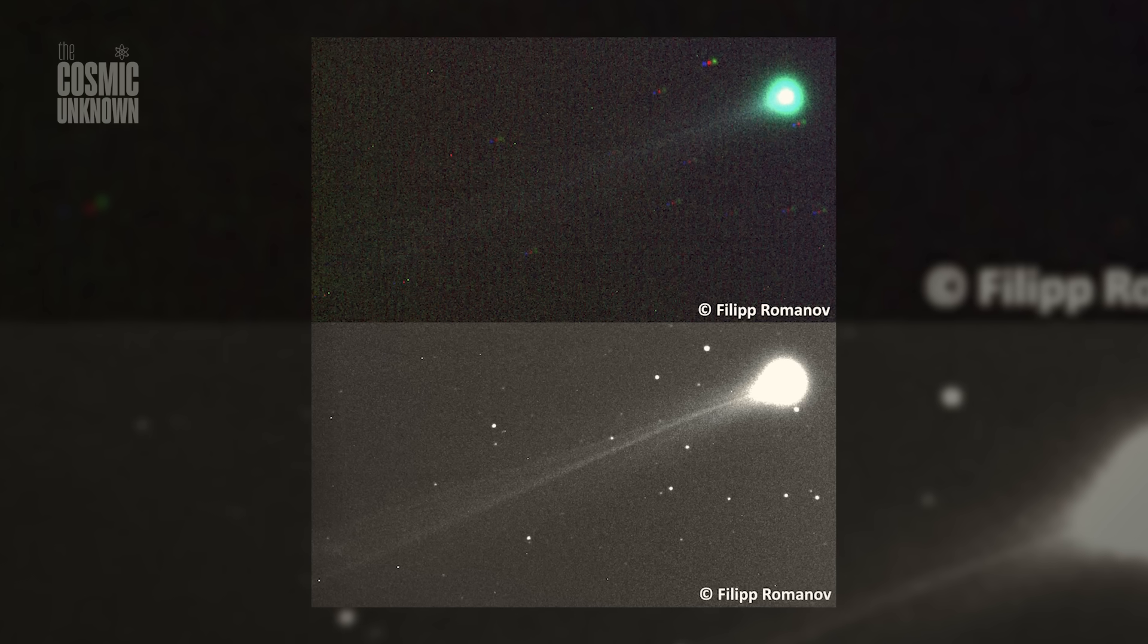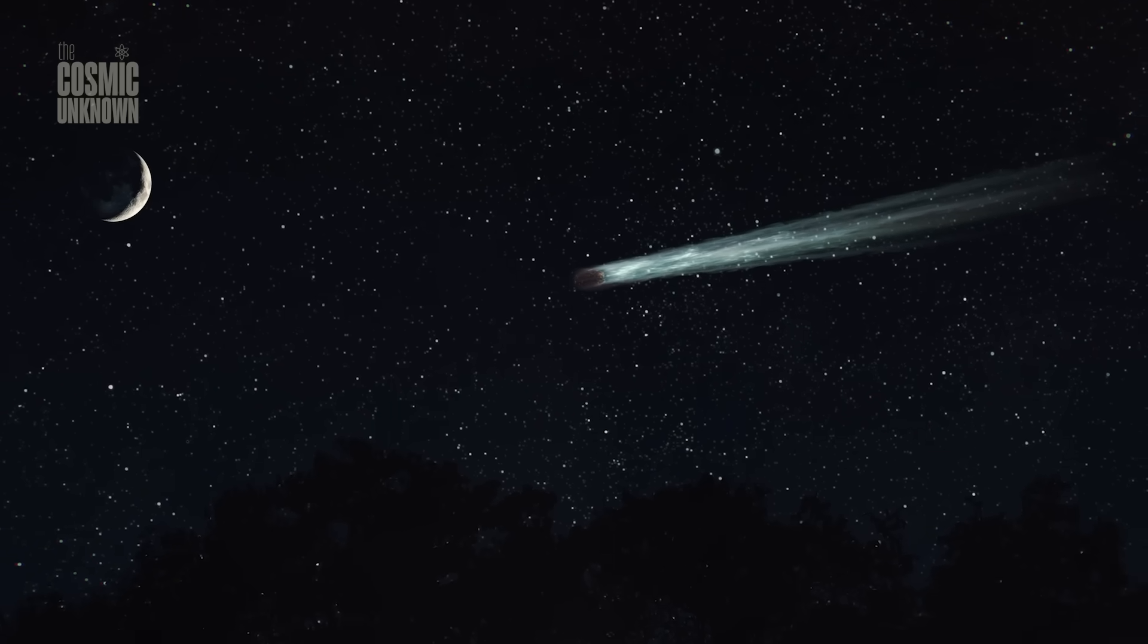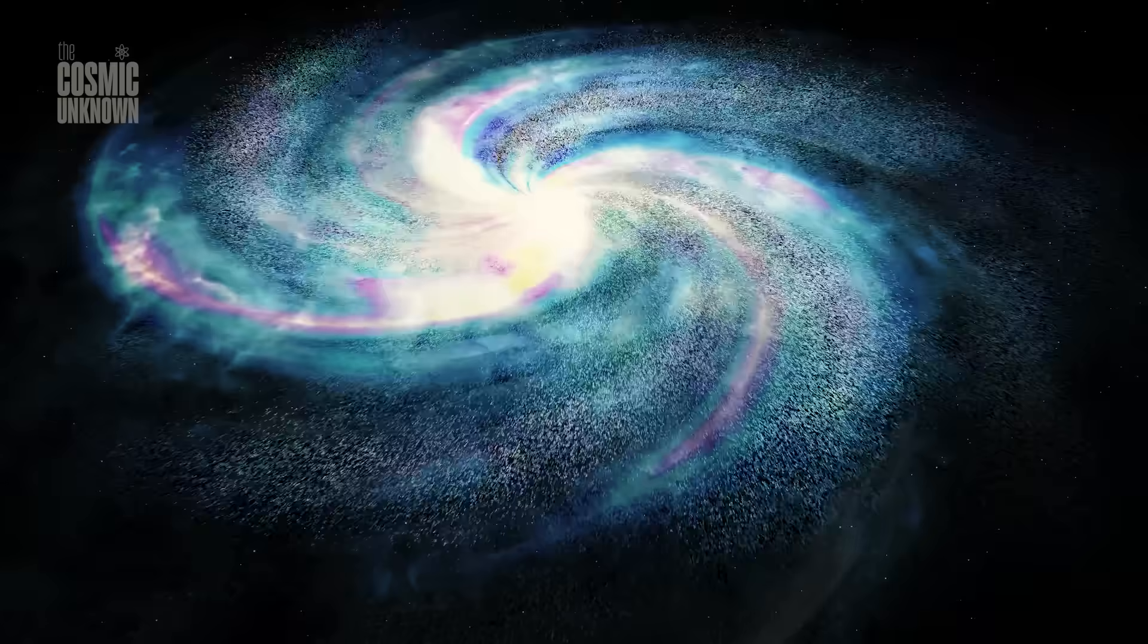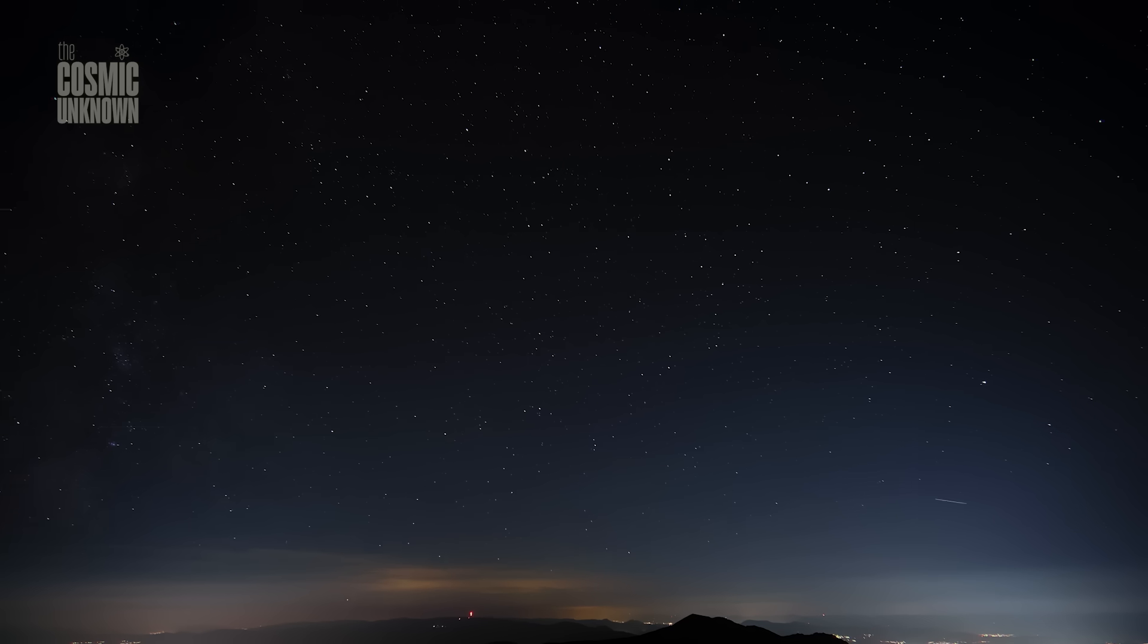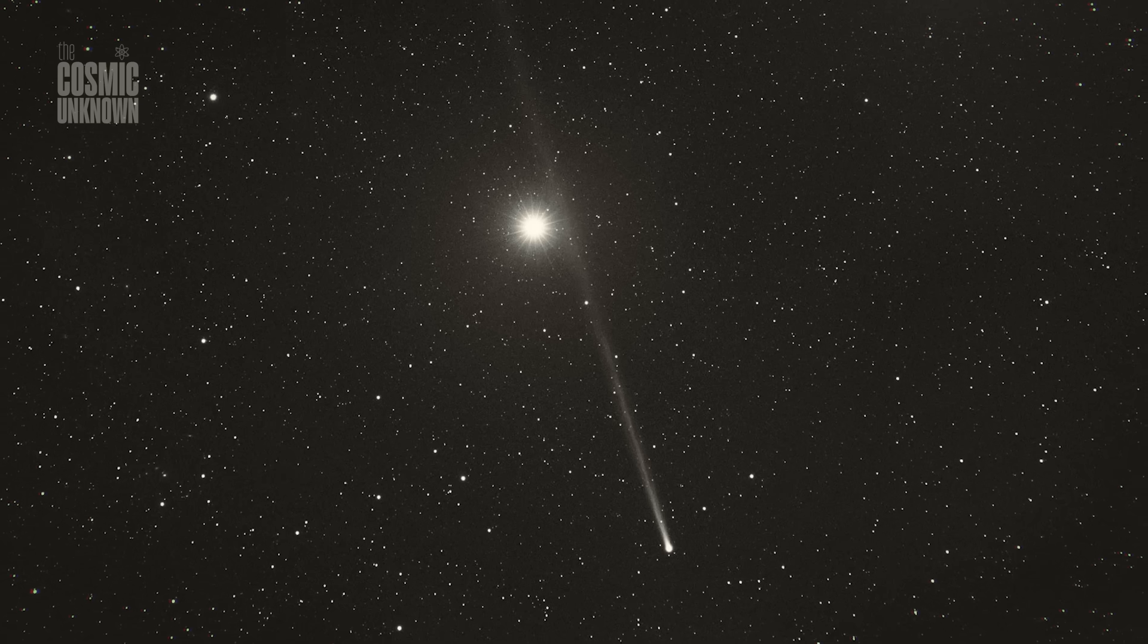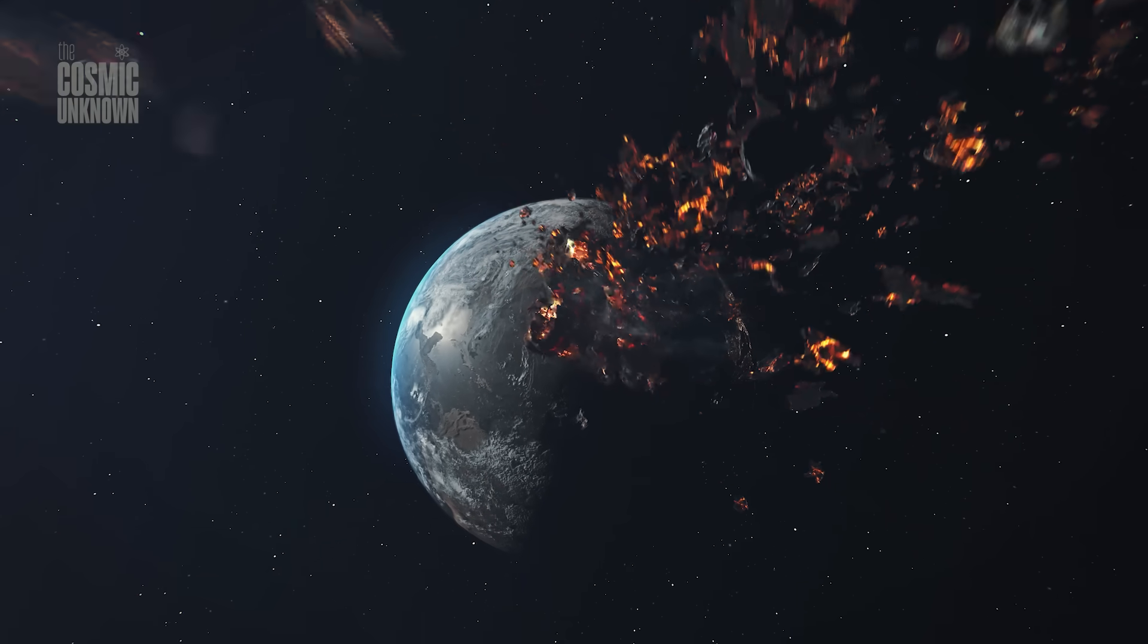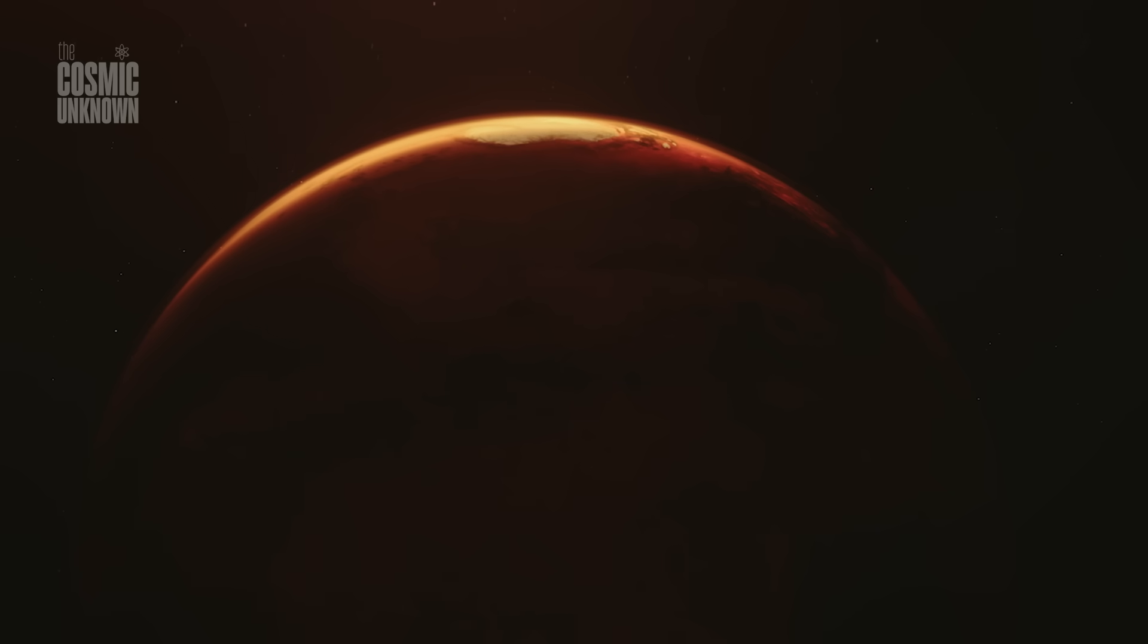In late September, something happened. The brightness jumped. Astronomers call it an outburst, a sudden flare in magnitude that can last for hours, sometimes days. It's often caused by a collapse, a pocket of pressure bursting, a crack in the surface. The sudden exposure of ice trapped for millennia, now vaporizing all at once. R2 SWAN surged to magnitude 5.9, maybe even 5.6 at its peak. And that's just what we saw from Earth. The coma, its cloud of gas, expanded to more than 2 degrees across. That's a massive envelope of activity, especially for a comet whose nucleus remains unresolved. We still haven't seen its core. All we know is what surrounds it, and even that is shifting.